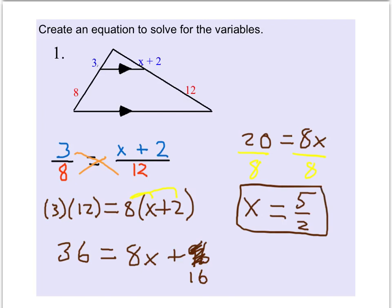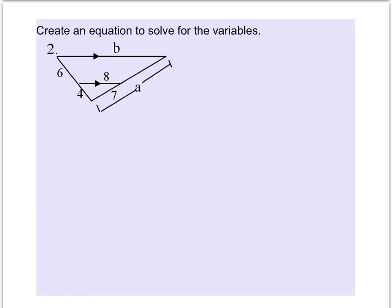Let's take a look at another example. So here we have two variables to solve. Let's deal with variable a first. Since a refers to the entire side length of the triangle, we want to figure out the other side length in order to set up our ratios. So 10 came from 6 plus 4. So now we have our ratios. We have 7 and a follow the same ratio as 4 to 10.